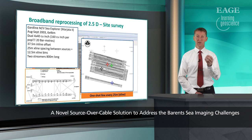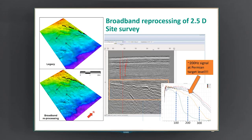We learned that in order to get very high spatial resolution you probably need smaller sources and you need to fire them a lot more often. What you see here are interpretations of the top Permian unconformity — the legacy data on top and the new reprocessing of the site survey data on the bottom — showing a dramatic improvement in spatial details, pockmarks, and sinkholes. We are also able to get very high frequencies quite deep down when we have small sources and a lot of shot points.